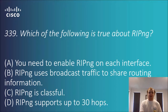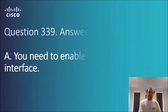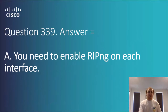Question 3.39: which of the following is true about RIPng? Options include: you need to enable RIPng on each interface, RIPng uses broadcast traffic to share routing information, RIPng is classful, and RIPng supports up to 30 hops. Both RIP version 1 and version 2 support 30 hops, but that doesn't make that option uniquely true here. To be compatible with IPv6, the answer is A — you need to enable RIPng on each interface.